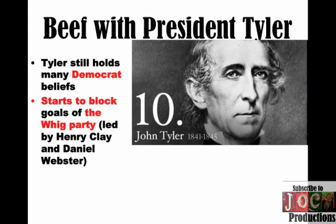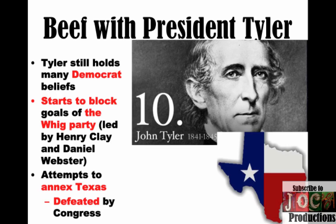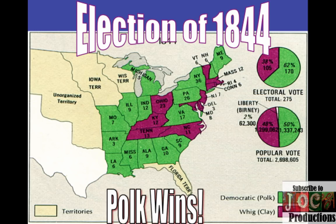Remember, Andrew Jackson had recognized the Lone Star Republic, but Martin Van Buren and Jackson were not interested in bringing up the controversy of trying to annex Texas. Tyler does try, but it is defeated by Whigs in Congress — they don't want any more slave states added to the Union. So in 1844, Tyler is basically out; no one wants him. The dark horse candidate is James K. Polk. He comes out of nowhere, running against the political veteran Henry Clay under the Whig party, and Polk wins.